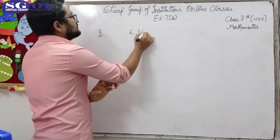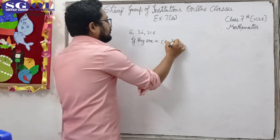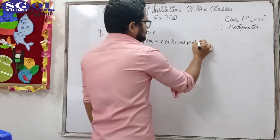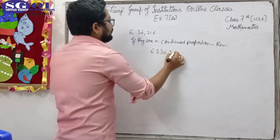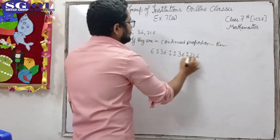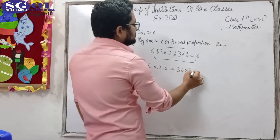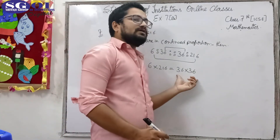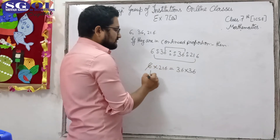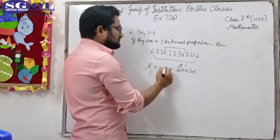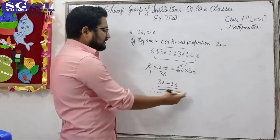The numbers are 6, 36, and 216. If they are in continued proportion, then 6 ratio 36 should be proportional to 36 ratio 216. We check: product of extremes is 6 × 216 = 1296, and product of means is 36 × 36 = 1296. Since both are equal, therefore they are in continued proportion.